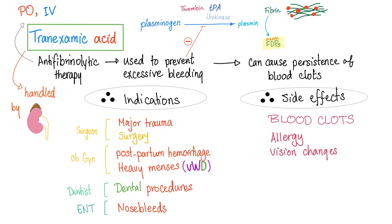Indications include major trauma surgery, postpartum hemorrhage, heavy menses — especially in von Willebrand disease — dental procedures, and nosebleeds. So tranexamic acid is loved by the surgeon, the OB-GYN, the dentist, and the ENT.